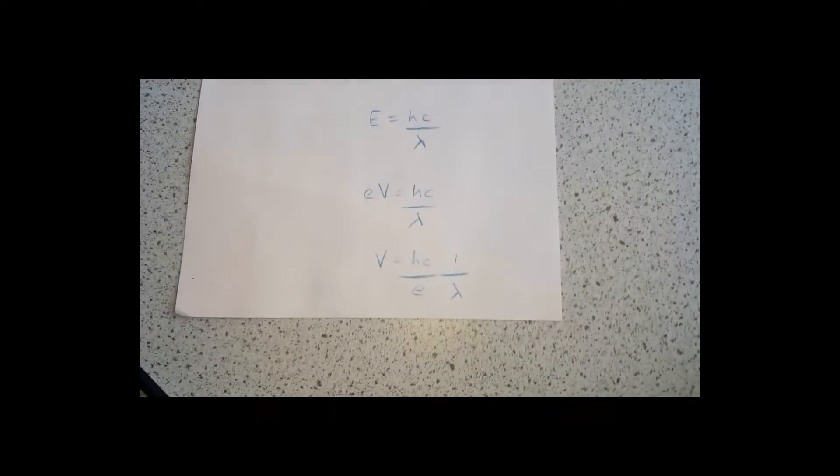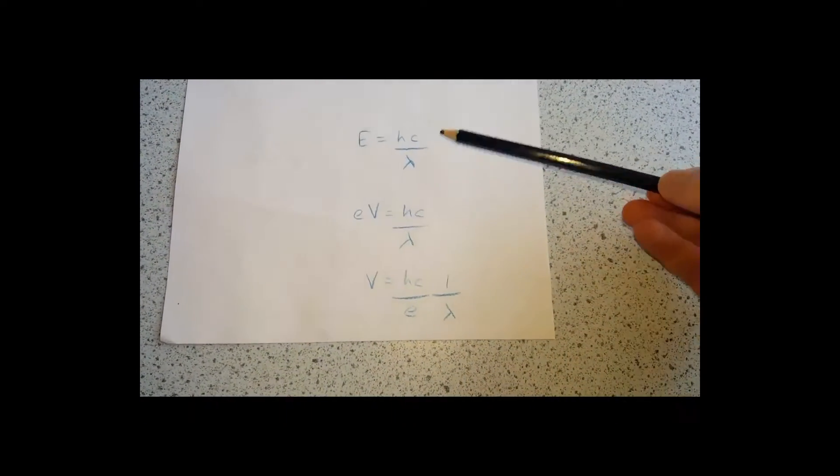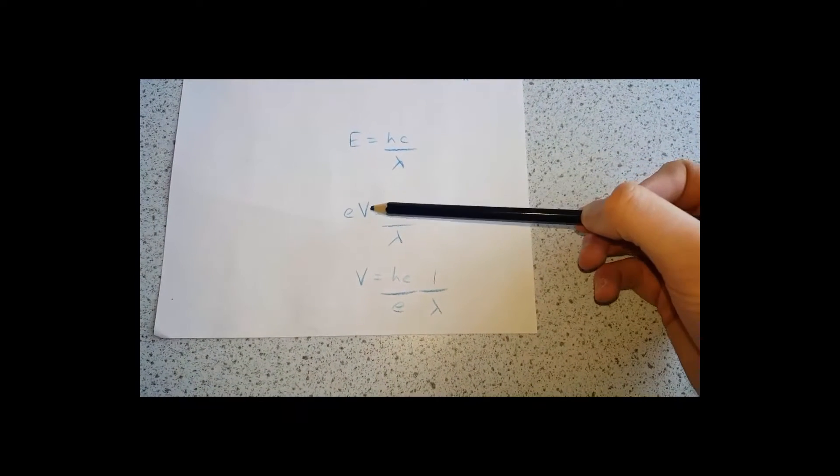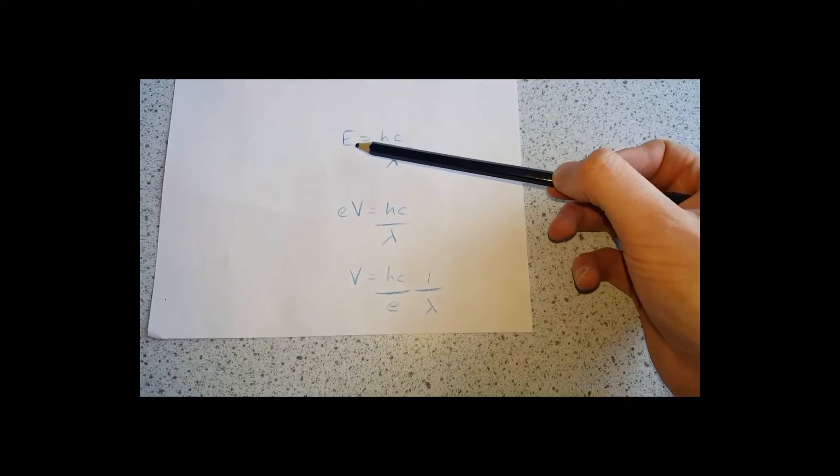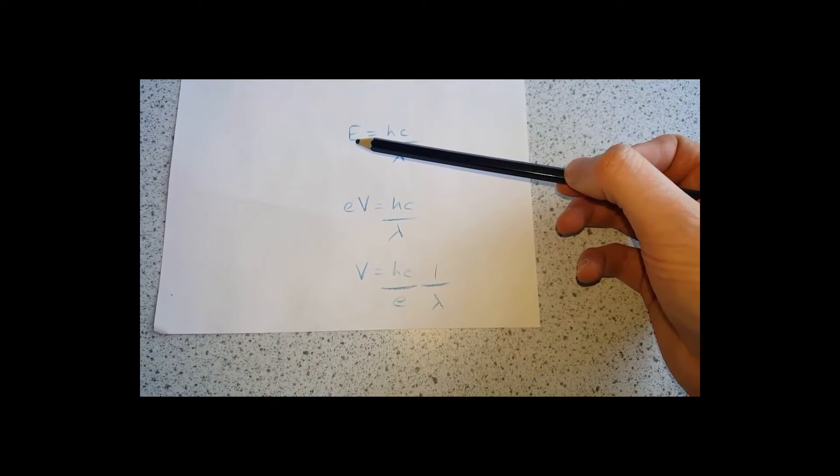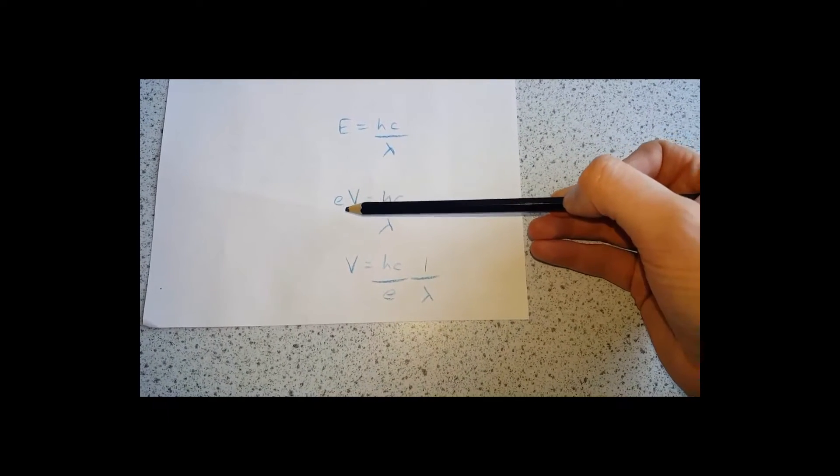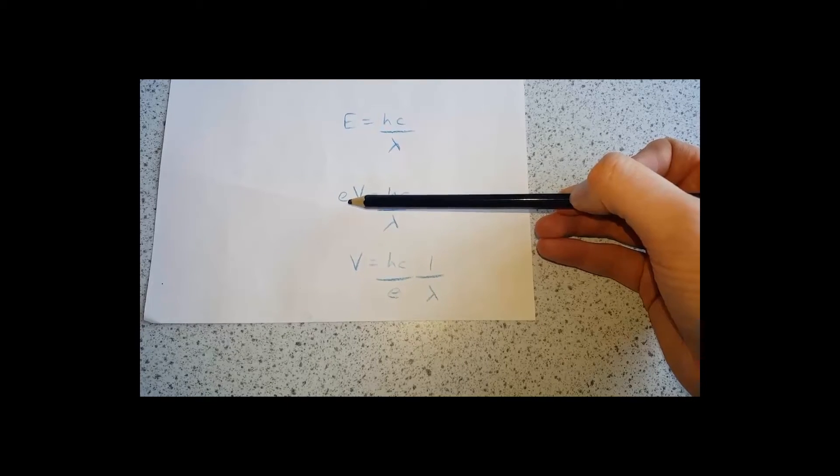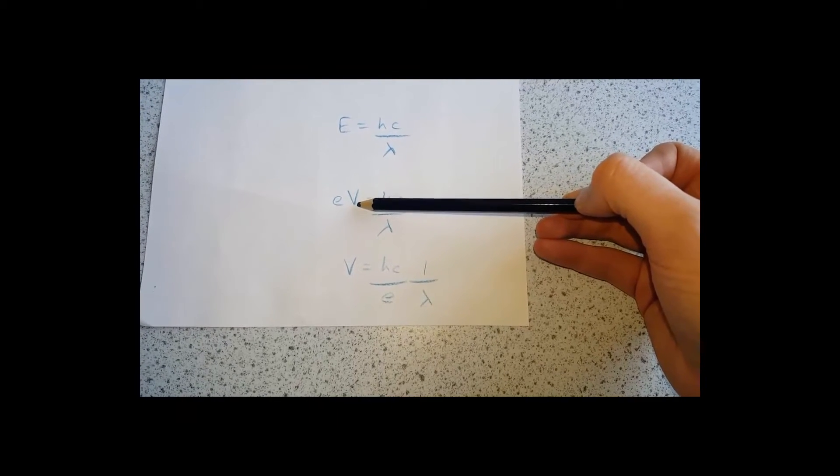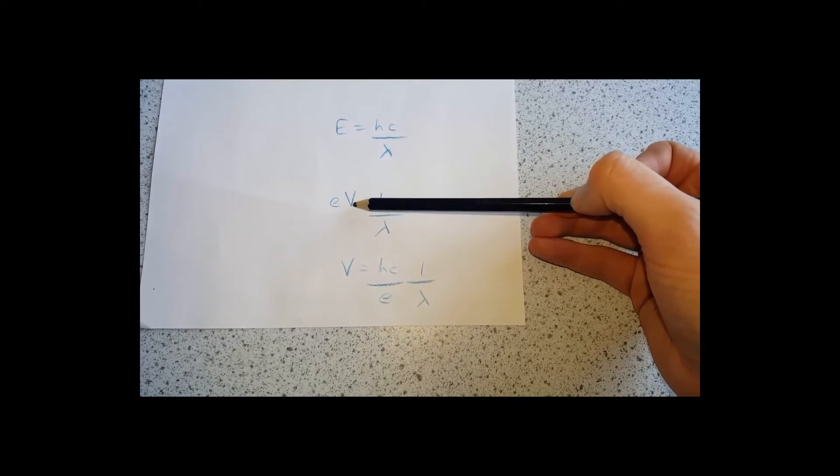Now to determine the Planck constant, we need to begin with our equation here. E equals hc divided by lambda. And the E here provided to the supply can be calculated by multiplying the charge on electron by the voltage.